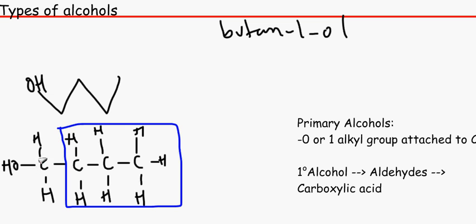Primary alcohols can be oxidised to make aldehydes, which have the suffix '-al'. You can then oxidise the aldehyde further to make a carboxylic acid. There can be up to three alkyl groups on the carbon. If you want to learn more about oxidising alcohols, please look at the video on changing alcohols — though that video hasn't been made just yet.